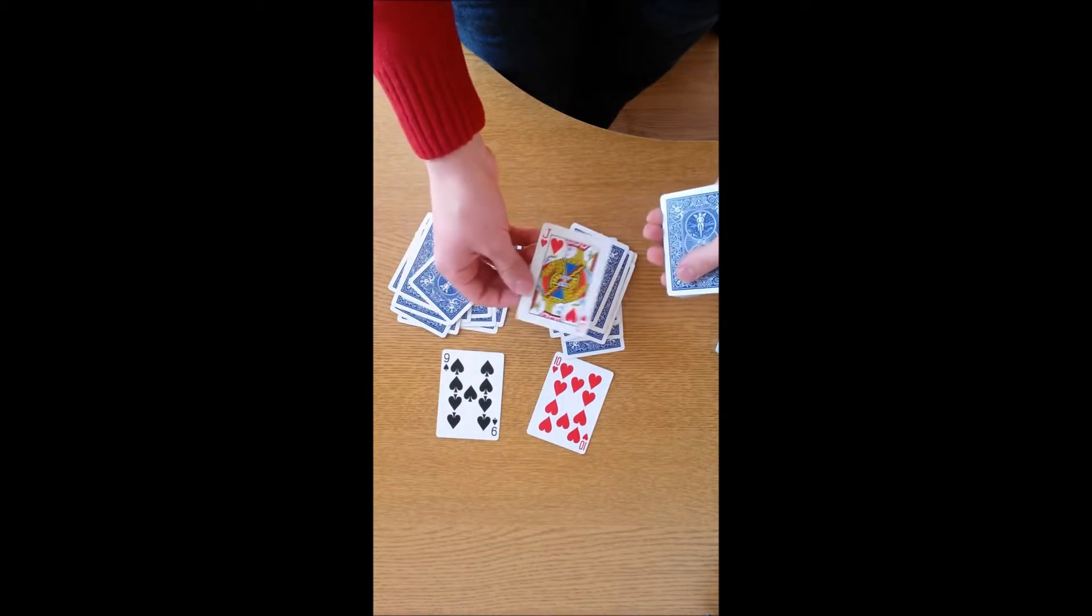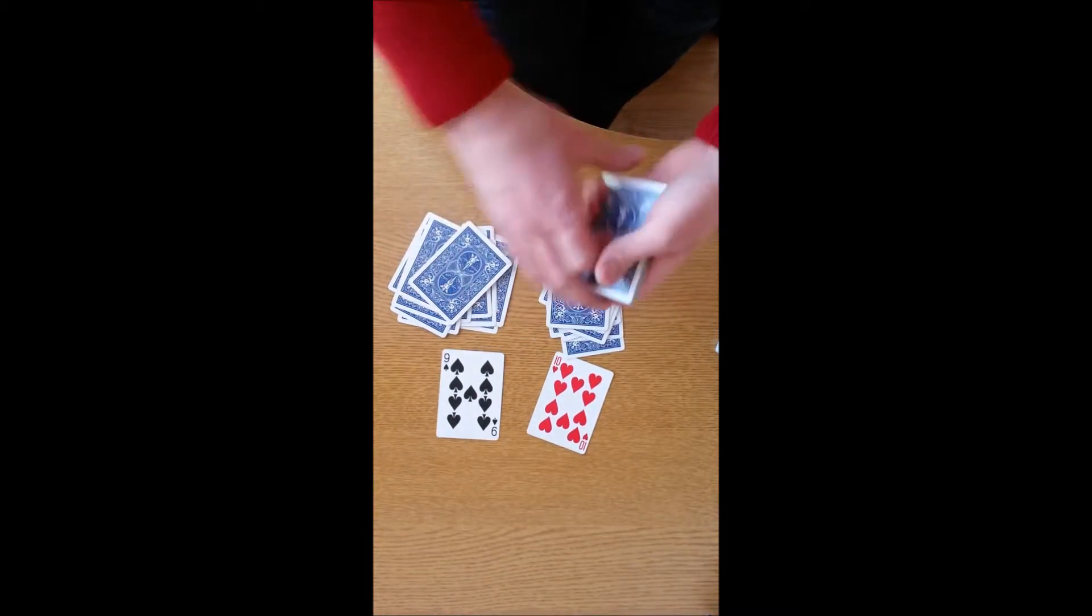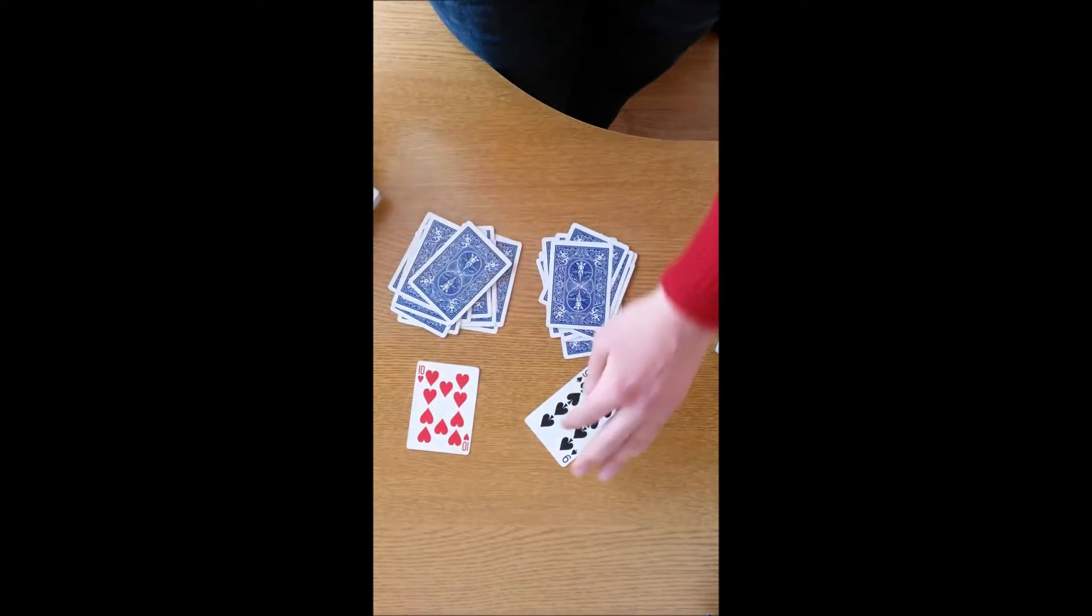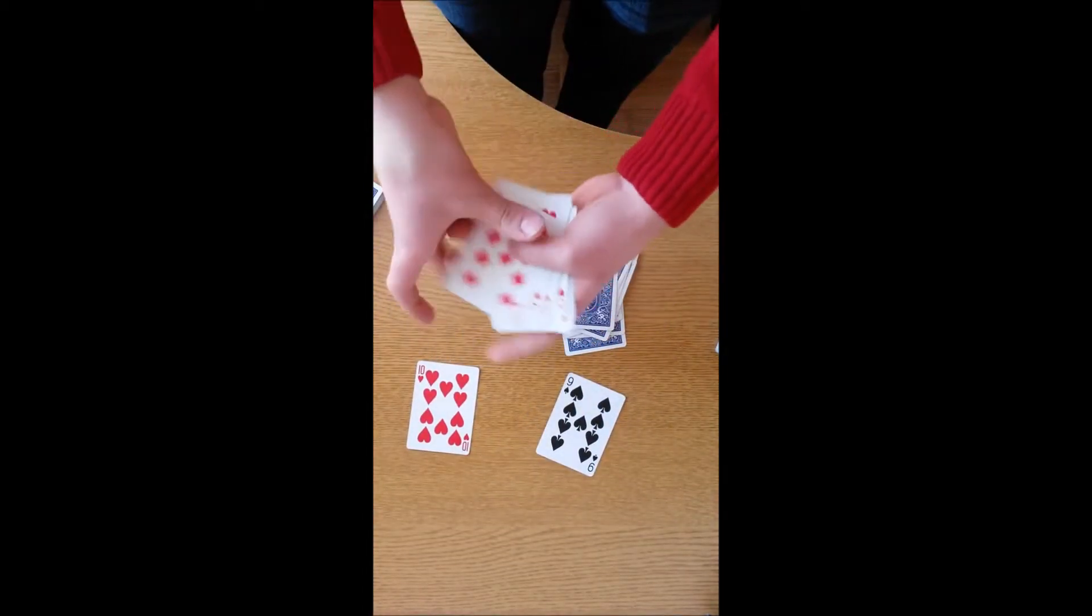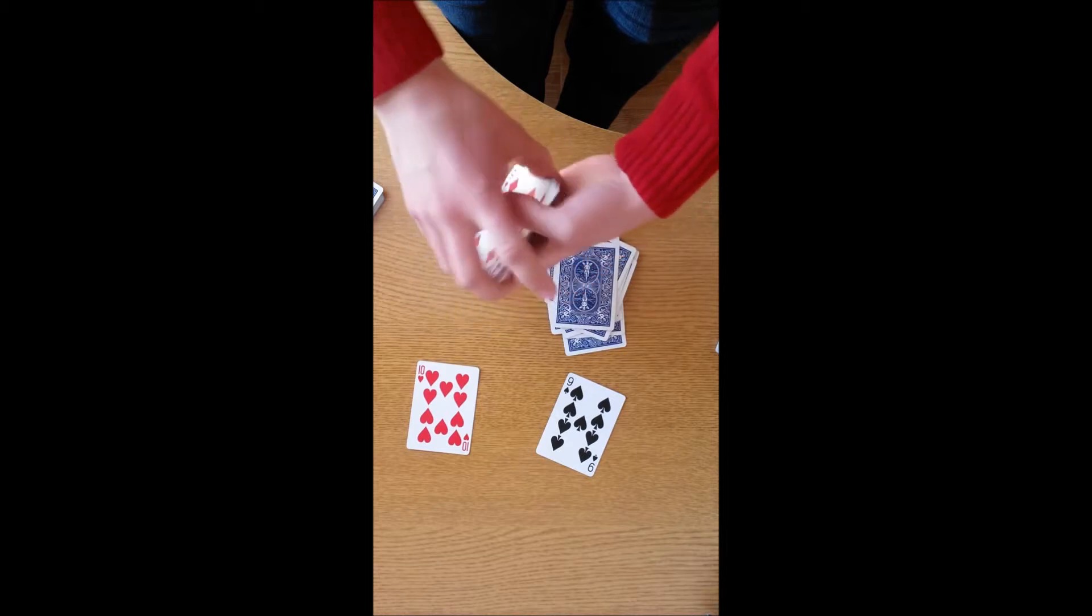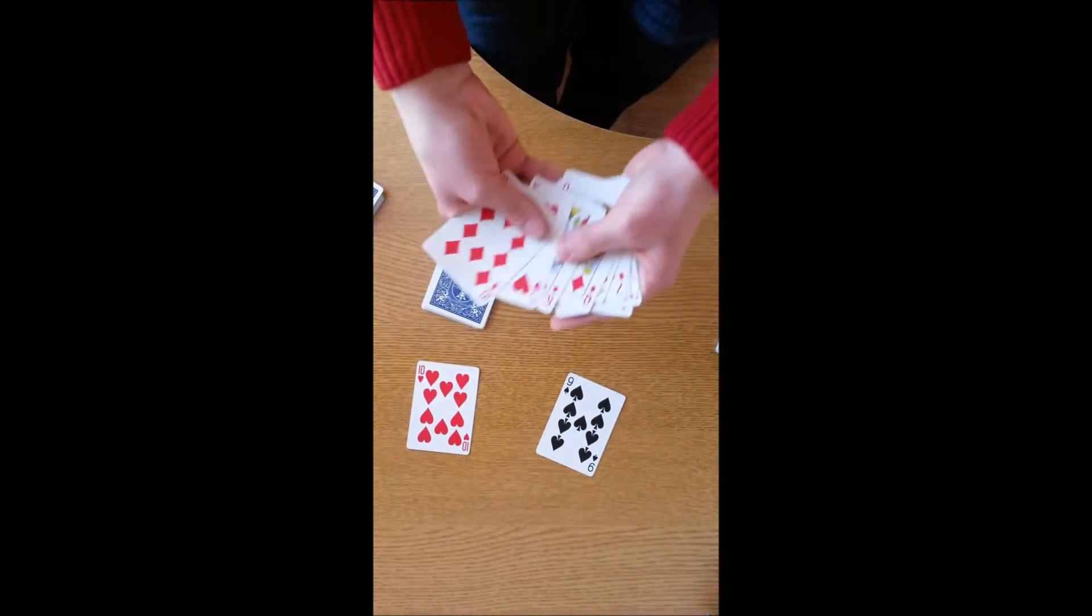When you get to the indicator card, you put it in the red pile, you switch things up, and as you can understand now, all the cards in this pile are red, and all the cards in this pile are red too, except your chosen Seven of Spades.